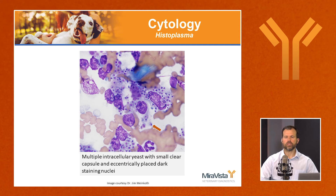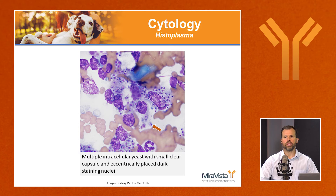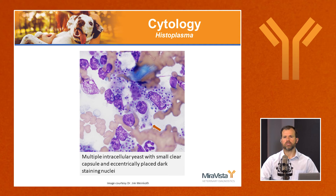GI histoplasmosis in dogs is most often diagnosed with a rectal scrape. On rectal scrape or cytology of other affected body fluids or tissues, you may find histoplasma yeast. The yeast are small and round with a very clear capsule, darkly staining nuclei that are often eccentrically placed, and they are frequently intracellular — contrasting with organisms like Cryptococcus, Blastomyces, or Coccidioides, which are extracellular. With experience, these features allow fairly specific identification of histoplasmosis.